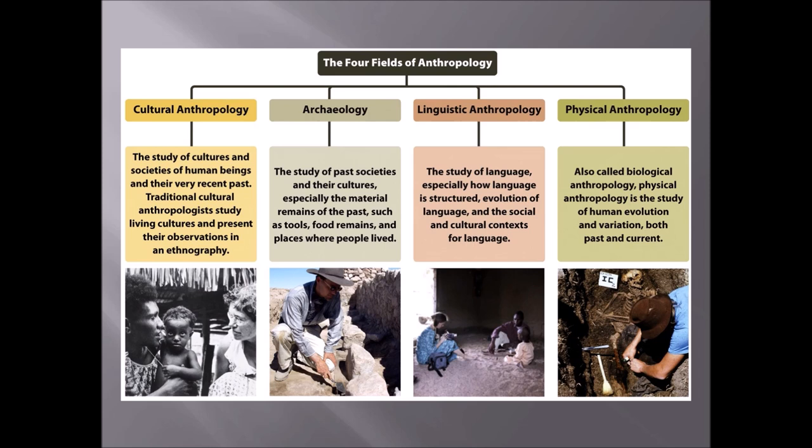The first thing about anthropology is that there are several different aspects, and none of them work in a vacuum — they're all interconnected. All of them have to rely on the other three to really understand anything. As a result, most schools teach what we call a four-field subject, or four-field anthropology, meaning we teach at least the basics of all four subfields.